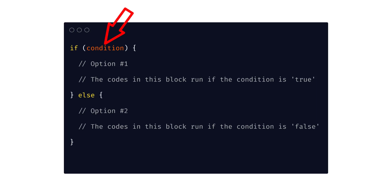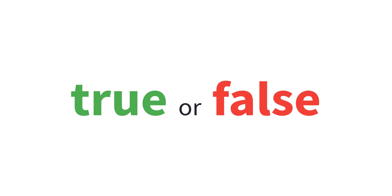A condition in a conditional statement is really just a question with a yes or no answer. In JavaScript, we say that the condition evaluates to either true or false. True and false have a specific meaning in JavaScript — they are called booleans. And like strings and numbers, they represent one of the data types in JavaScript.